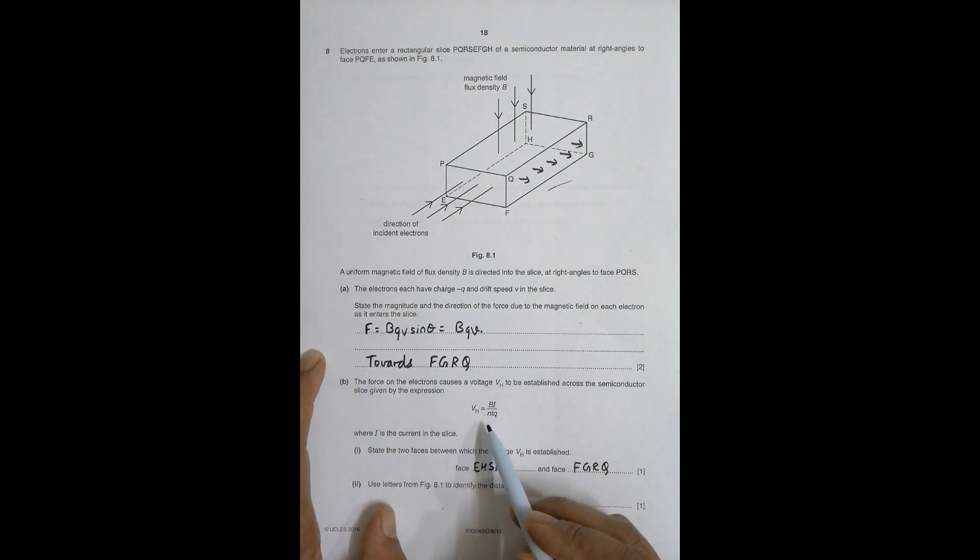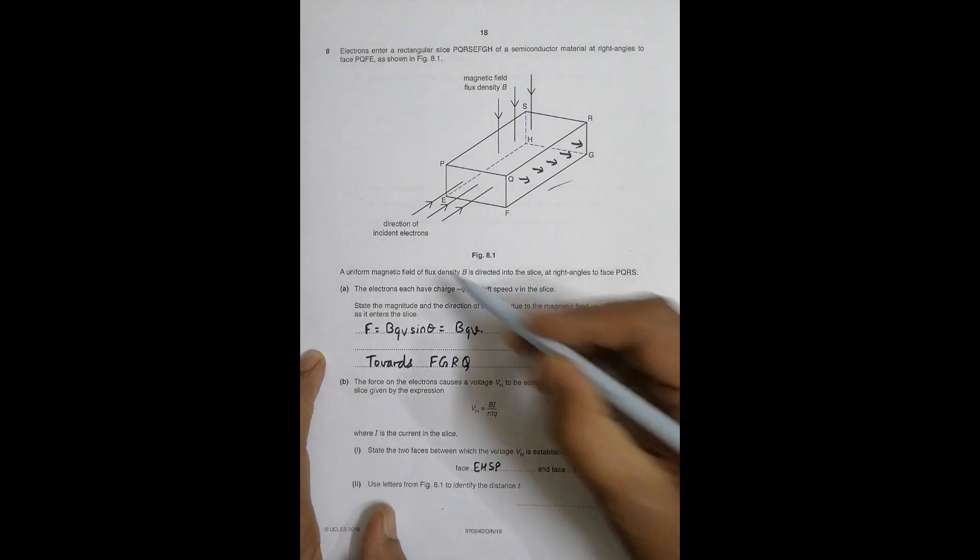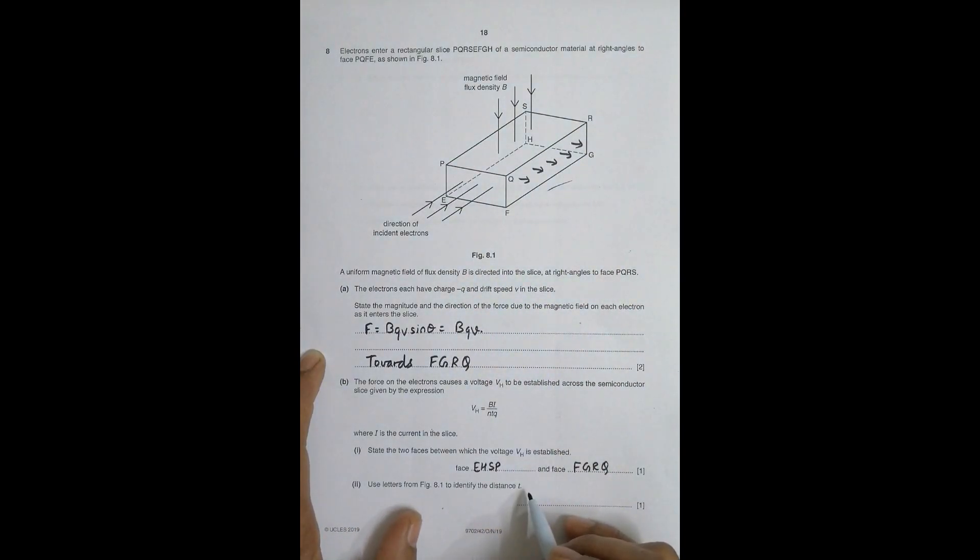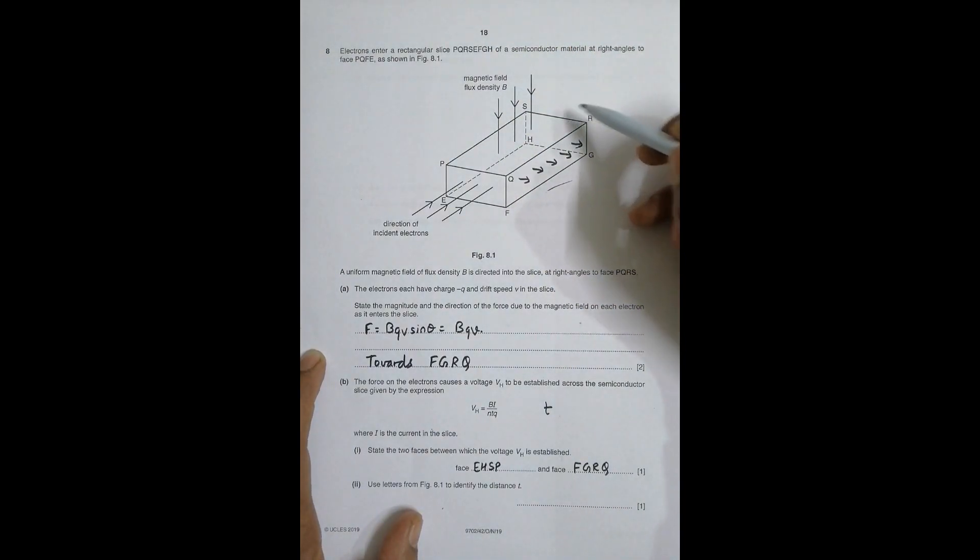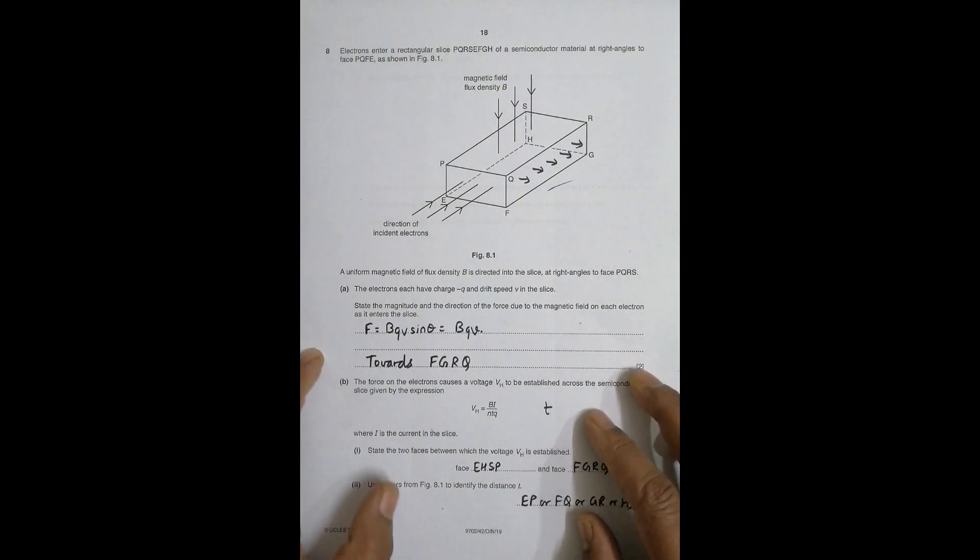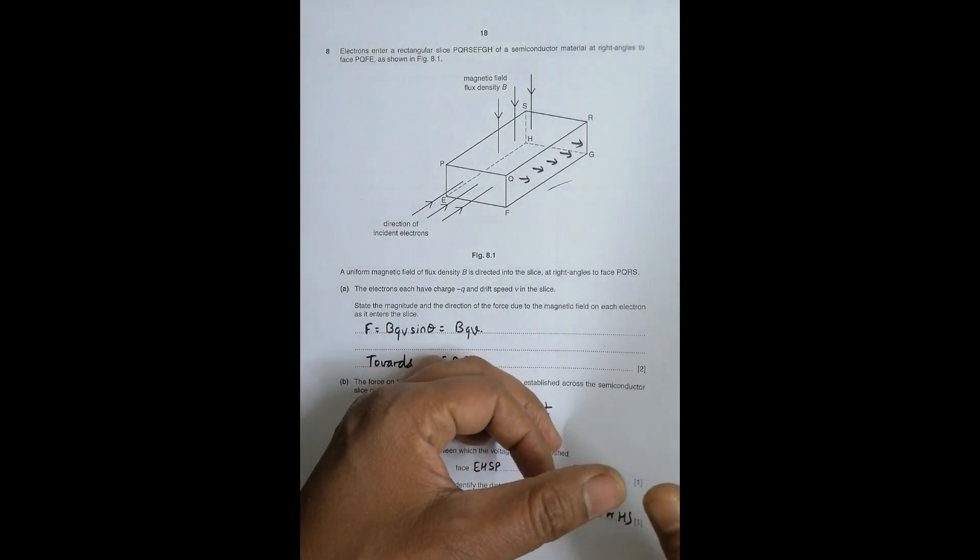Now use letters from Figure 8.1 to identify the distance t. One thing we have to remember in this Hall voltage is that t is the distance through which the magnetic field crosses - the thickness of that distance cleared by the magnetic field. So the magnetic field clears this distance, so it should be either FQ or GR or SH or EP.